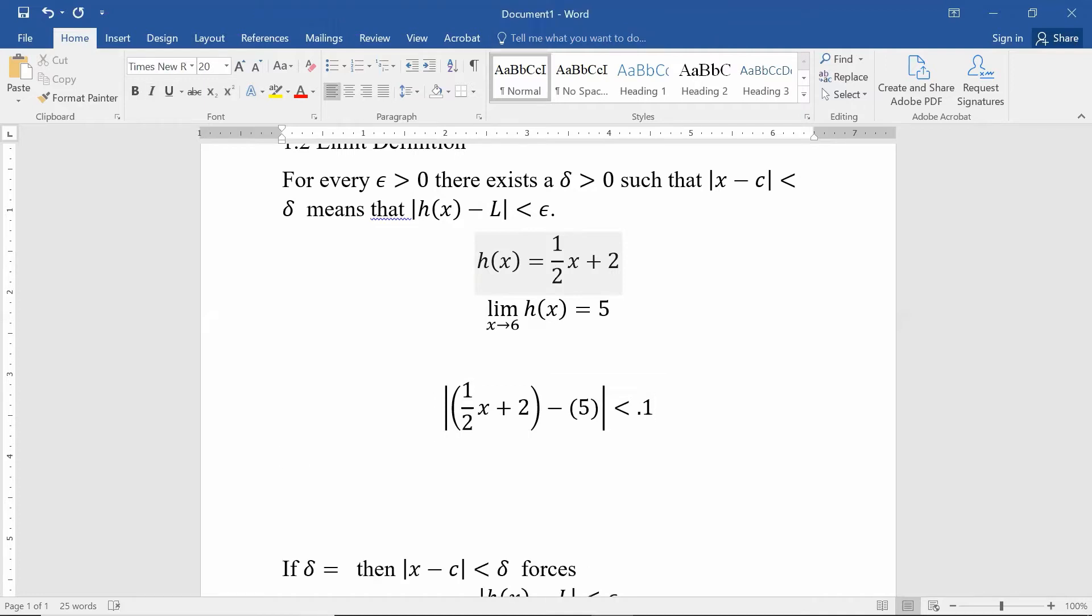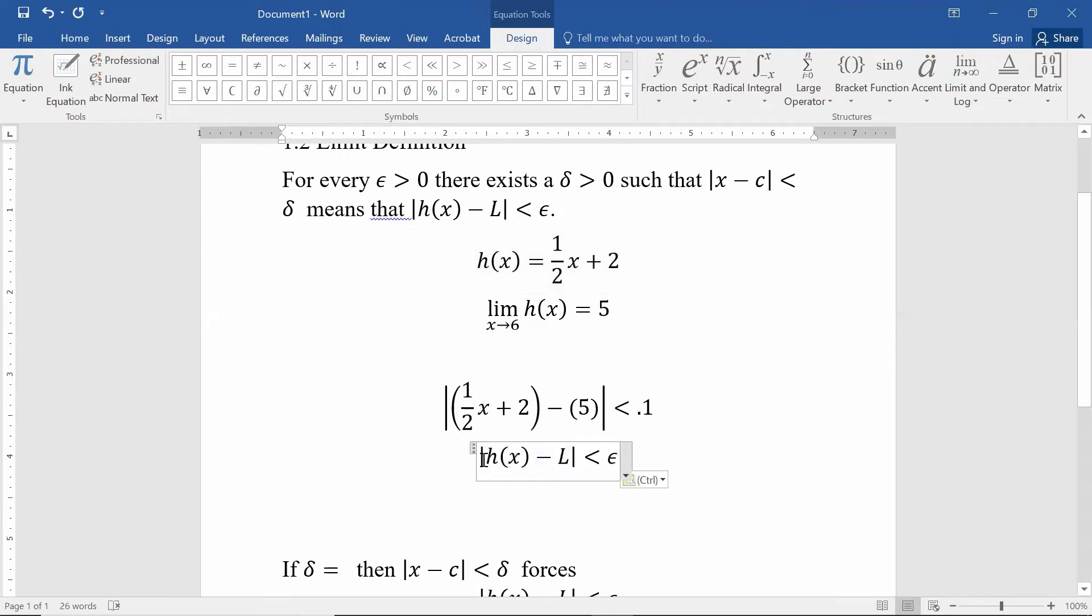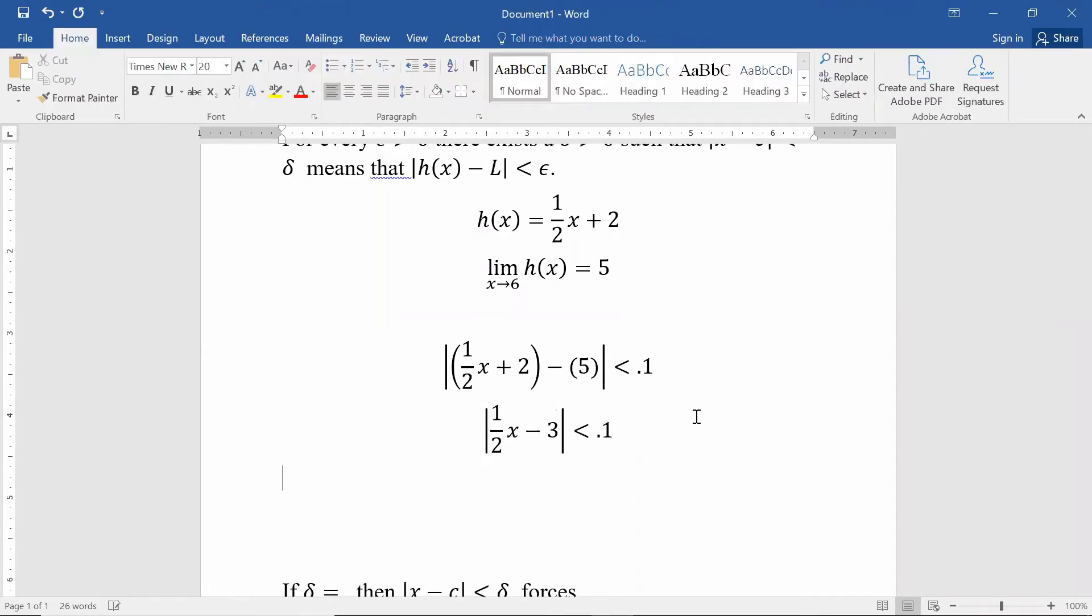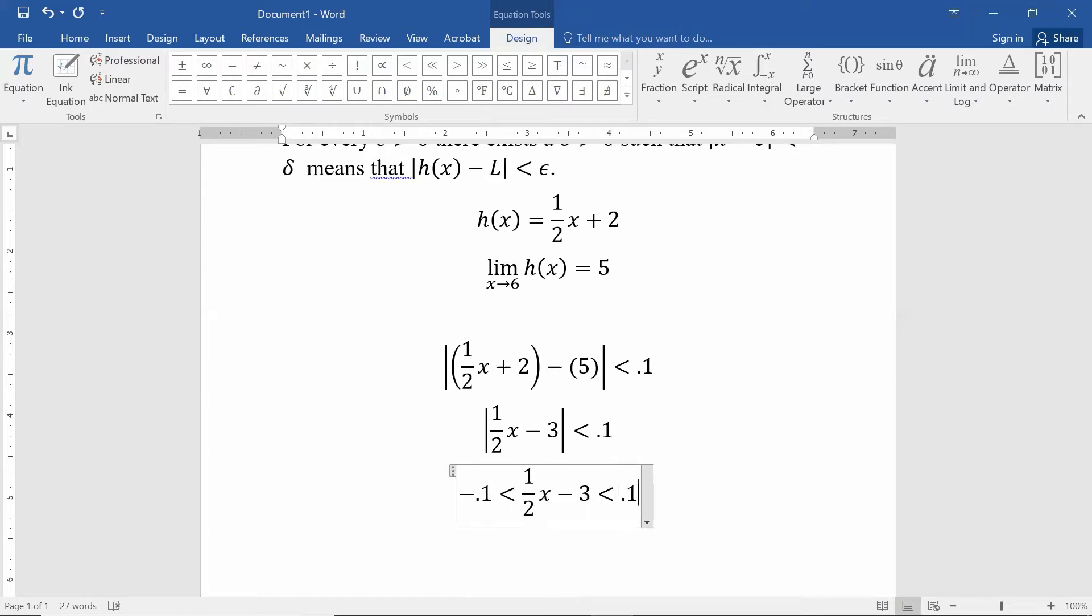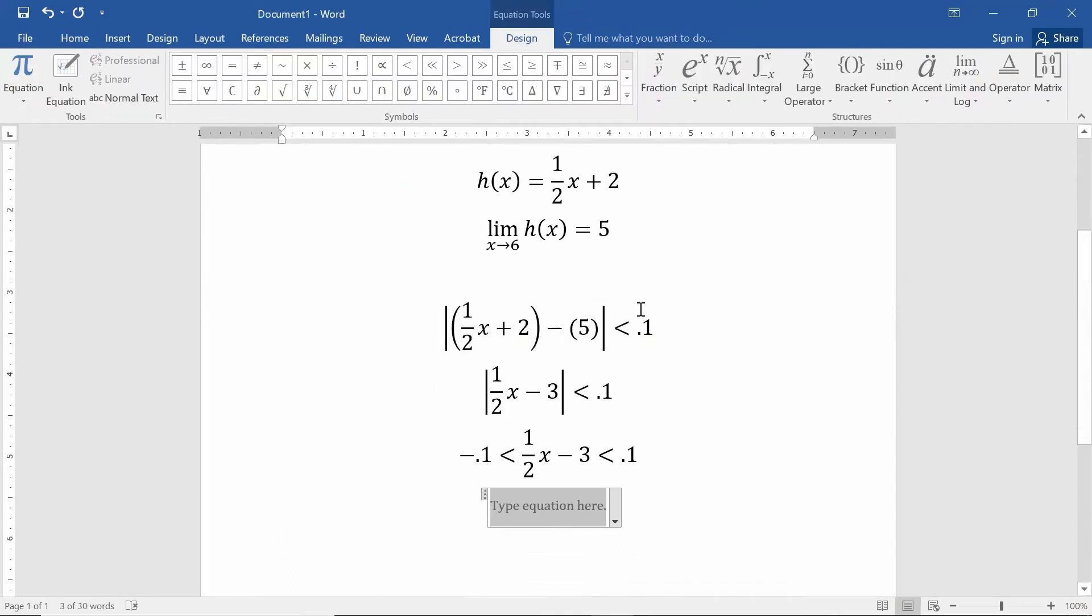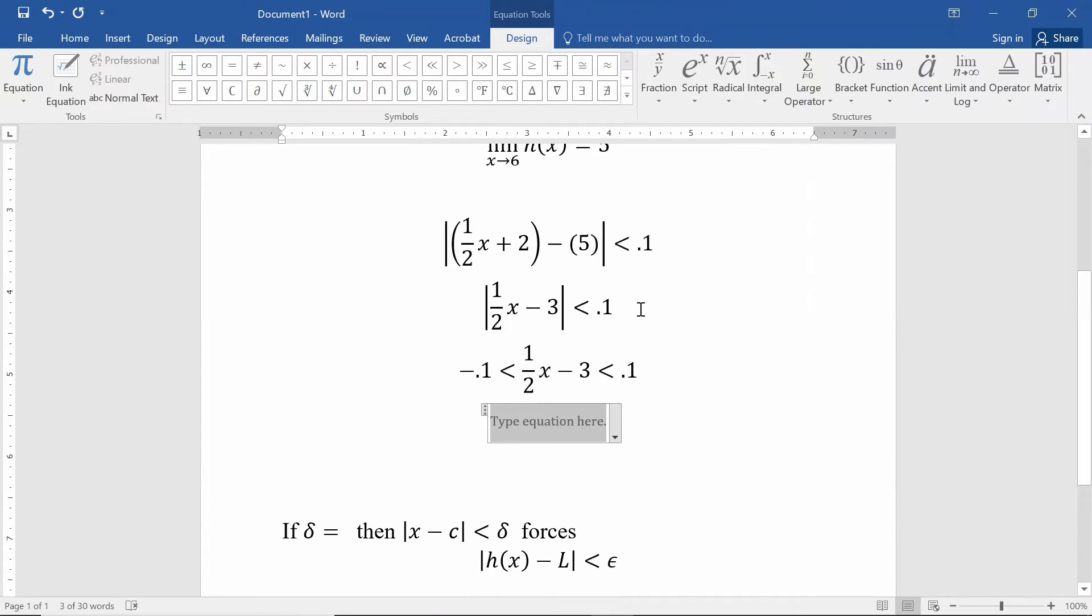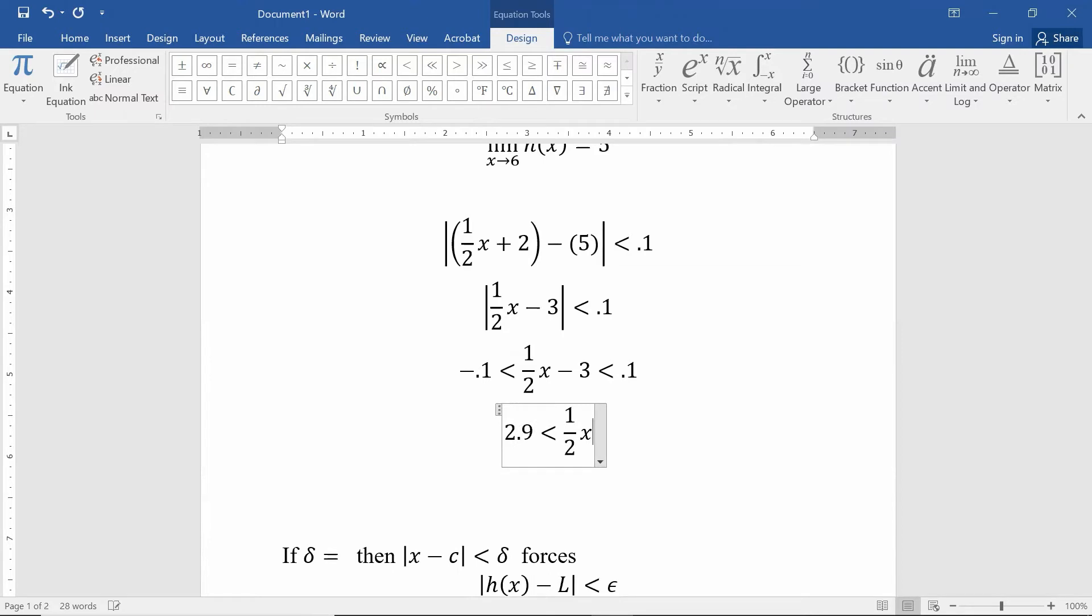Now we can start rolling along, so combining like terms we get 1/2x minus 3 is less than 0.1. This is going to be a little bit different from our last one but not that much different. So in absolute values we need to be less than 0.1. That means my expression on the inside needs to be between negative 0.1 and positive 0.1. If I add 3 to each side, I get 2.9 here on the left.